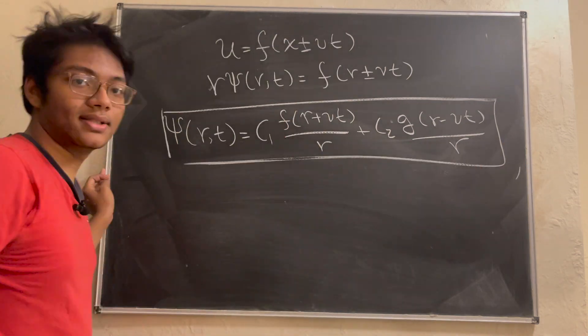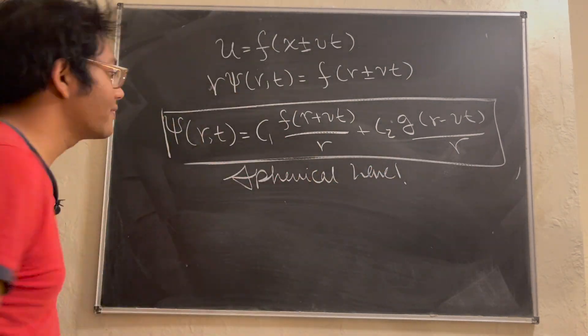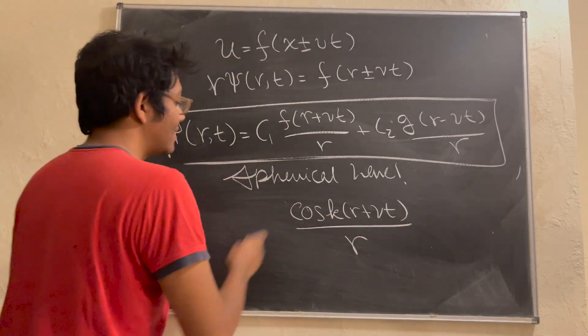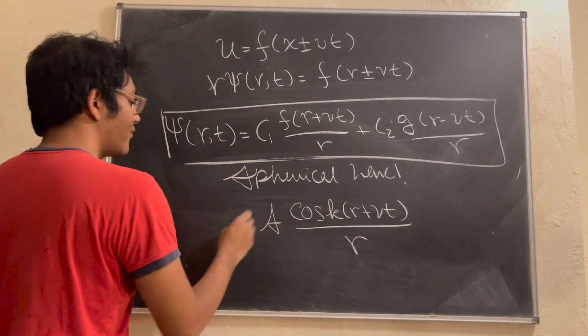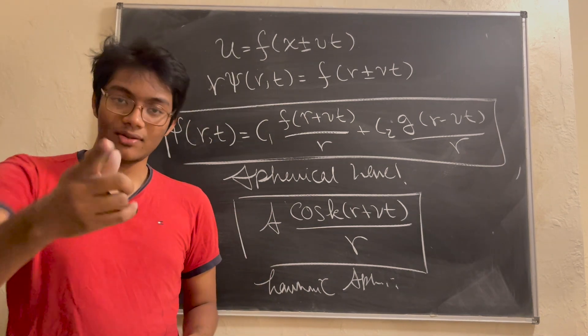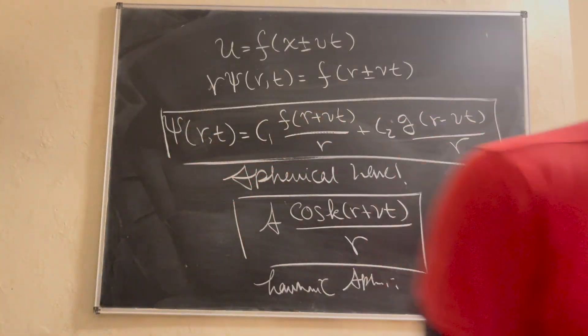There you go, ladies and gentlemen. And if we simplify it just a bit further, we'll get the equation for a spherical harmonic wave, which is sinusoidal. And there you go. Hopefully you enjoyed this episode of Crazy Maths and Physics. We'll see you in the next one.